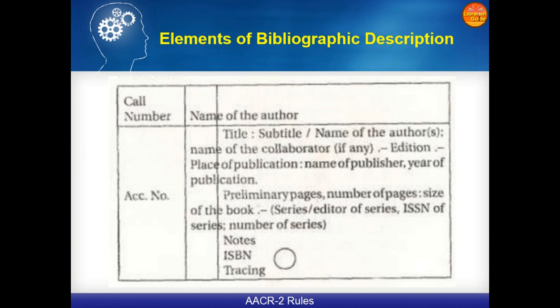After the call number there is a first indention, second indention, and third indention, that is the hidden line. Then we write the name of the author — that is the access point. Below that, from the second indention, we write the title, colon, subtitle, followed by a slash, then the name of the author. If there is one author, two authors, or three authors, accordingly we write them separated by a semicolon followed by a colon.